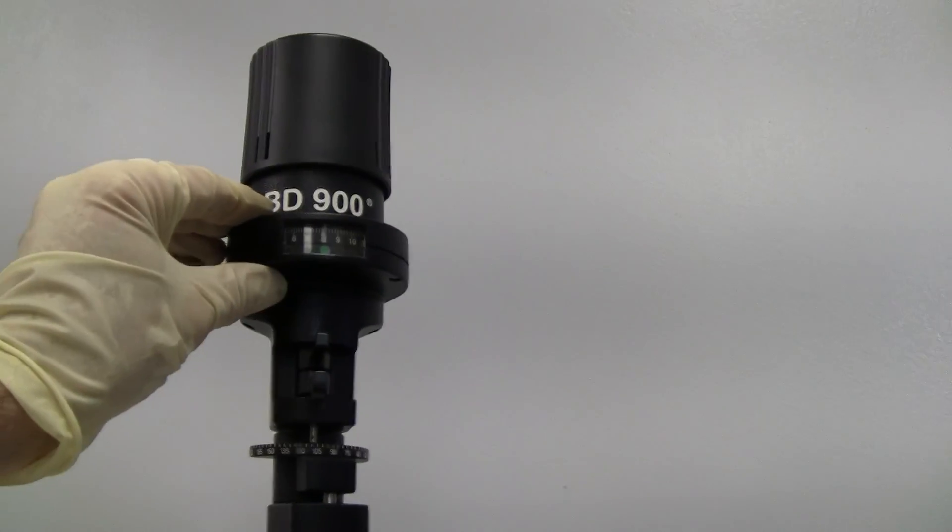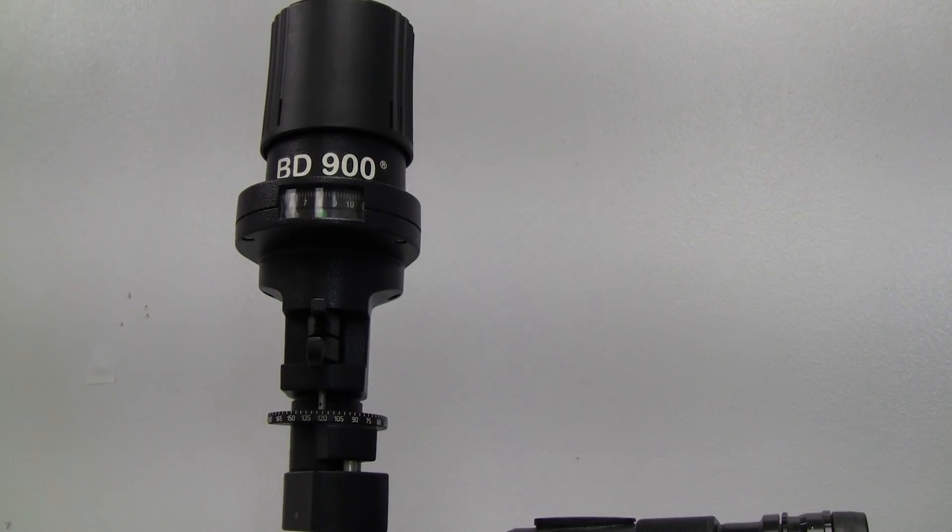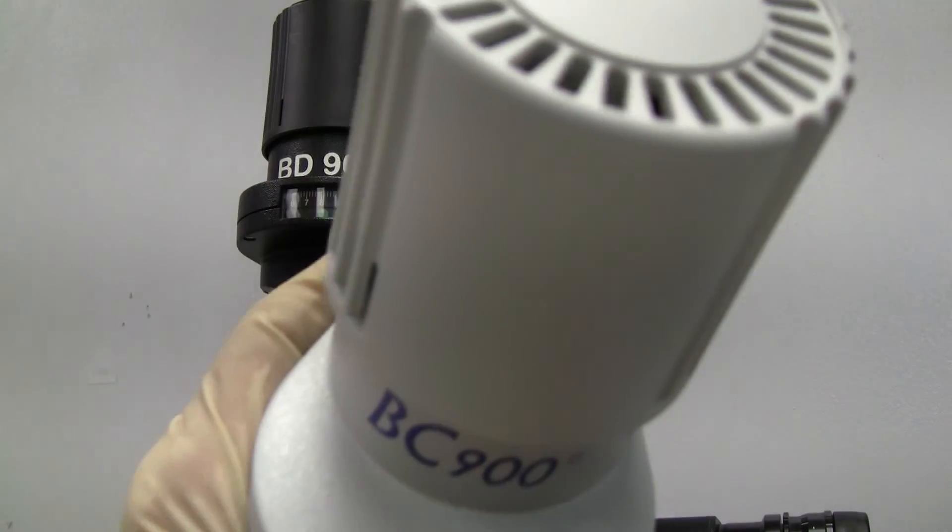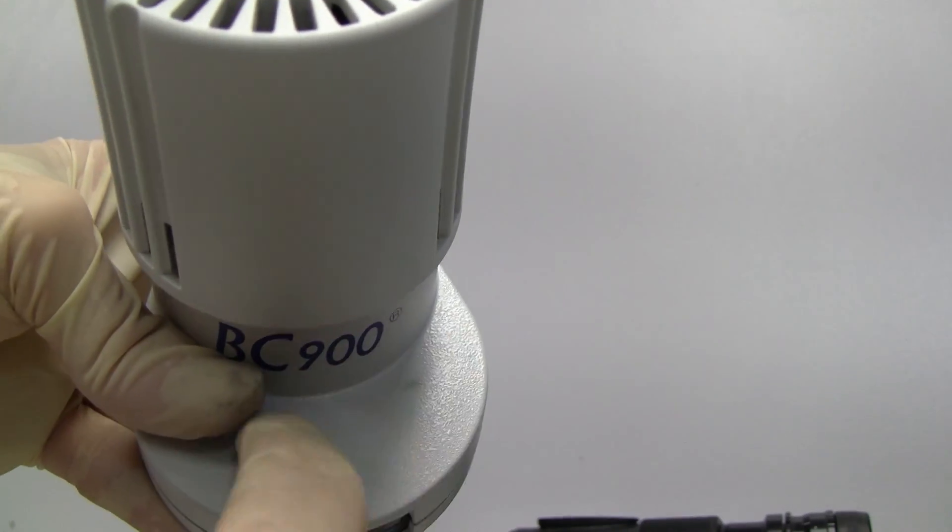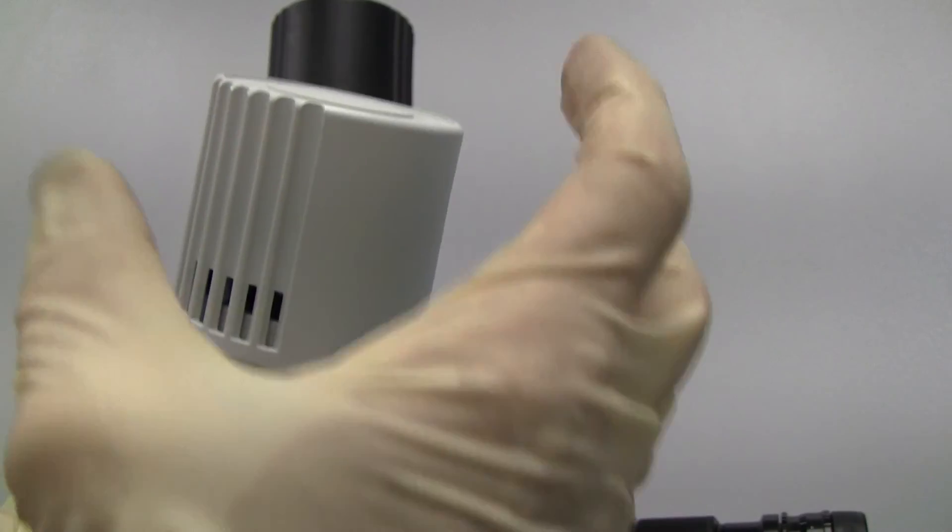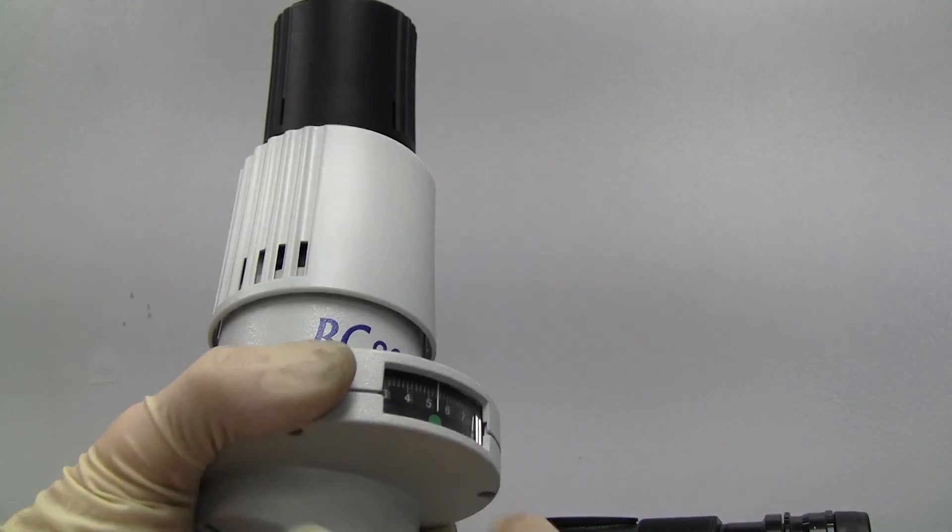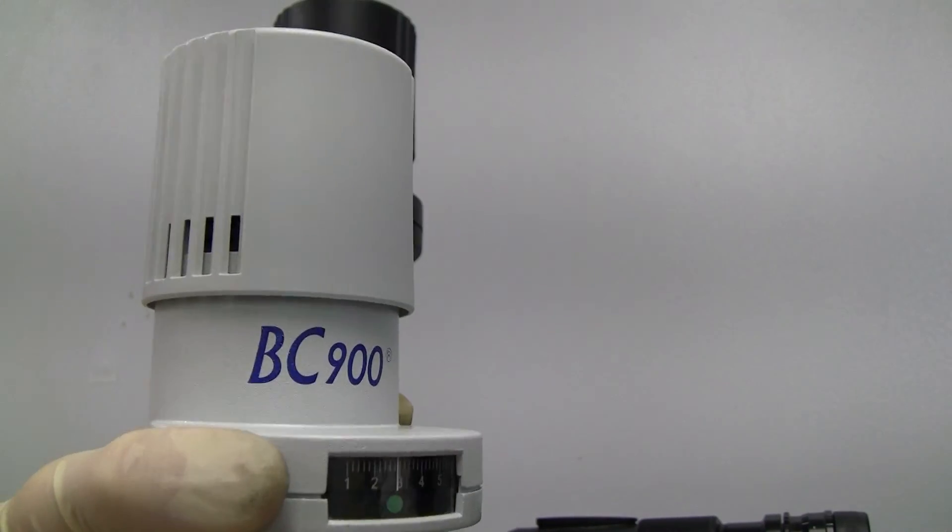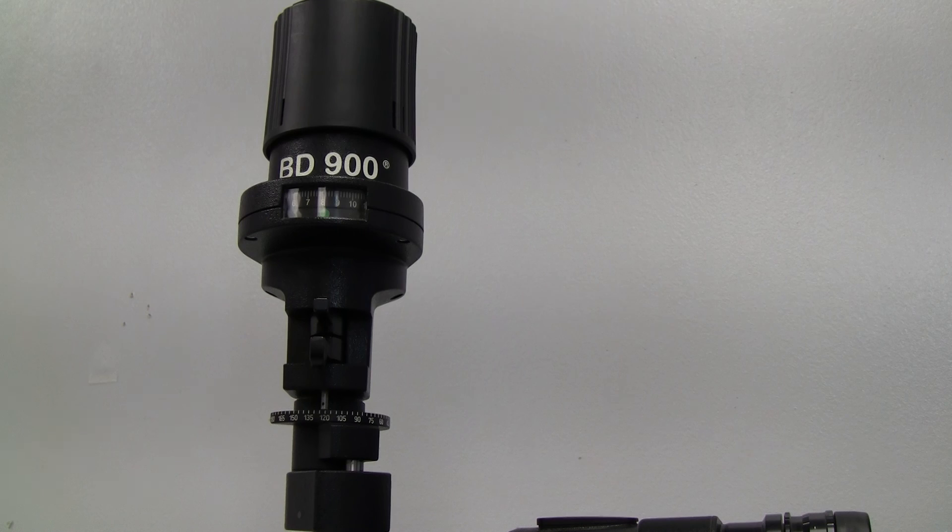So, on the BC and the BD, you cannot upgrade them to a LED because there are no screws up here for you to put your kit on top and screw it in. So, it's impossible to upgrade a BC and a BD to an LED.